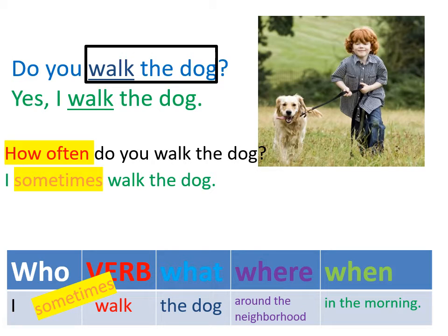Bạn dắt chó đi dạo bao lâu một lần? You can answer: I sometimes walk the dog around the neighborhood in the morning. Chúng ta đặt 'sometimes' ở giữa I và walk — nghĩa là ở giữa 'who' và 'verb'.